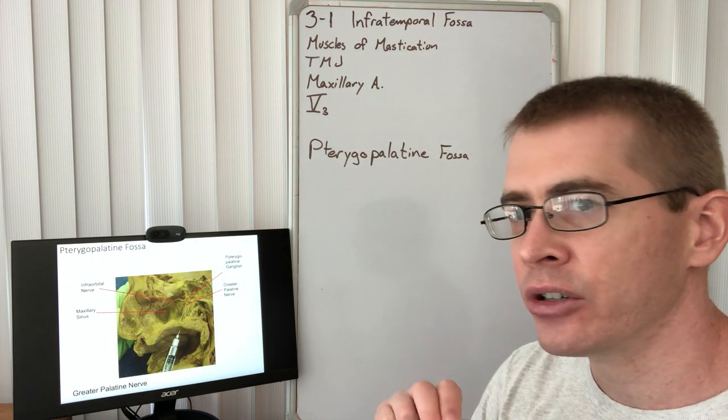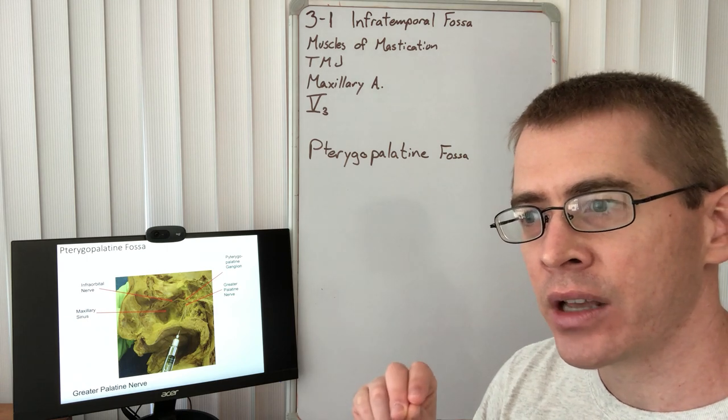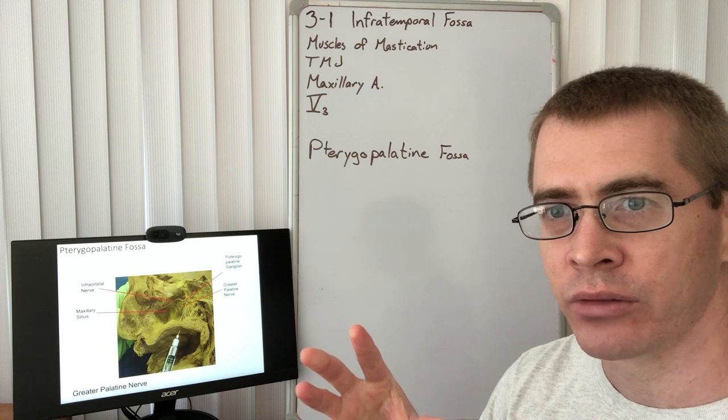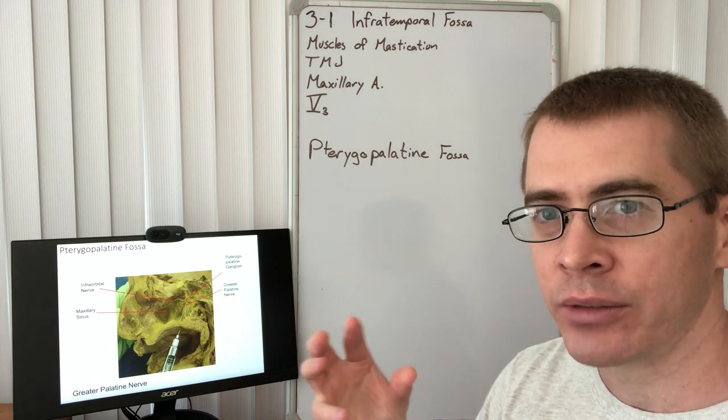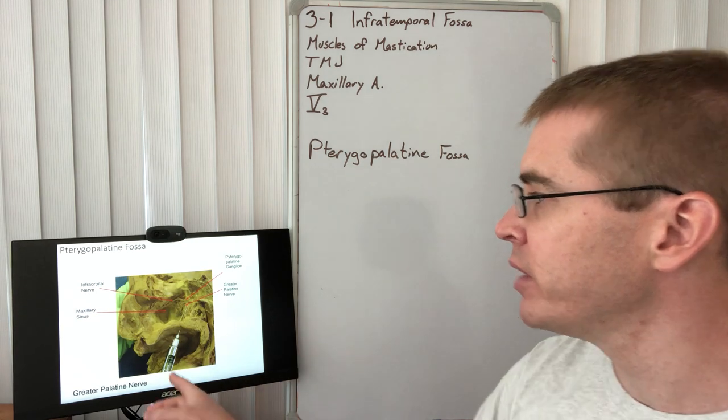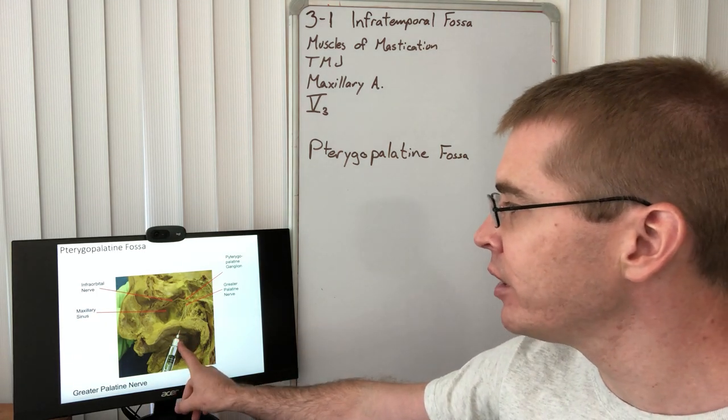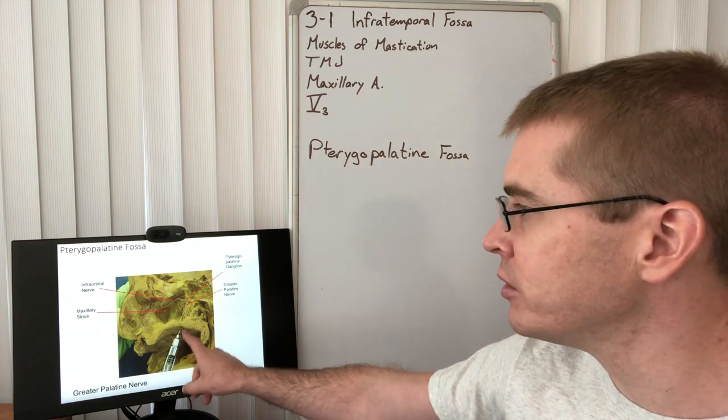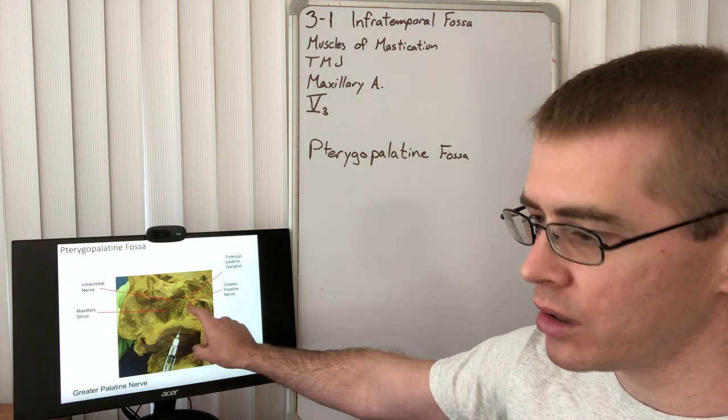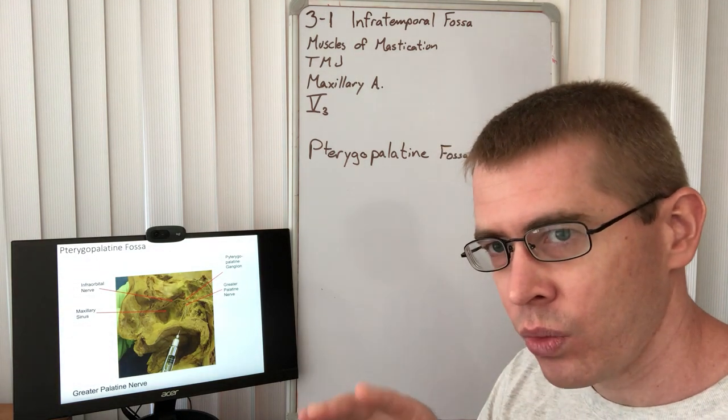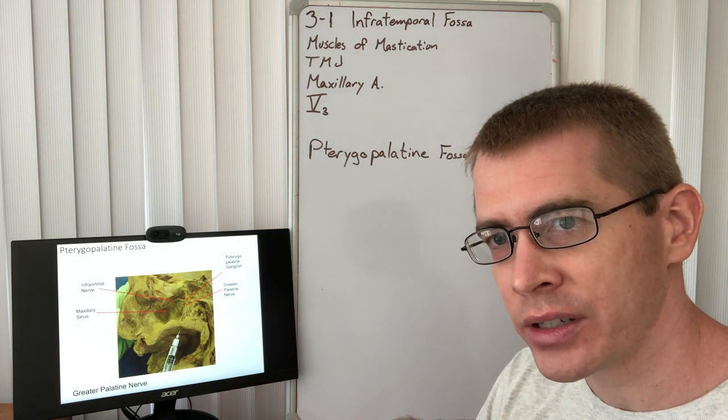These palatine nerves are the nerves that are anesthetized by your dentist when your dentist is doing a root canal or whatever fun process they have planned for you that day. In order to do this, they take a needle and pierce the soft palate through into the pterygopalatine fossa where both of these nerves are isolated.